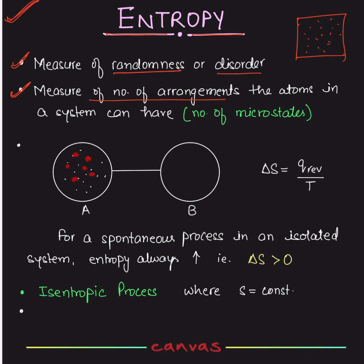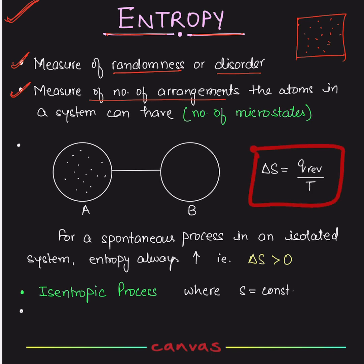Because now the molecules have more freedom — they have more space to roam around. Delta S is calculated as the reversible heat exchange divided by temperature. It is a reversible process where heat exchange is divided by temperature.